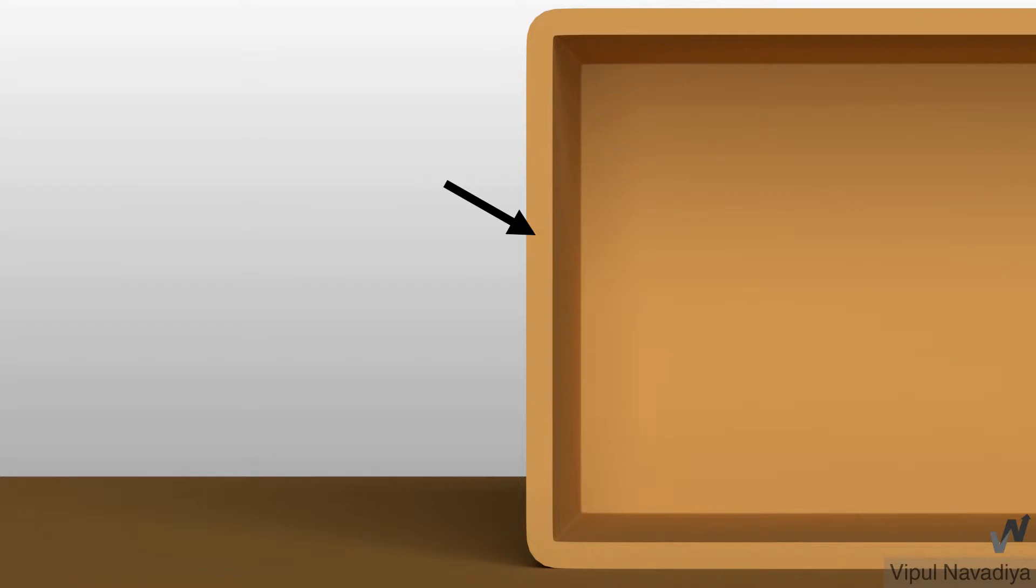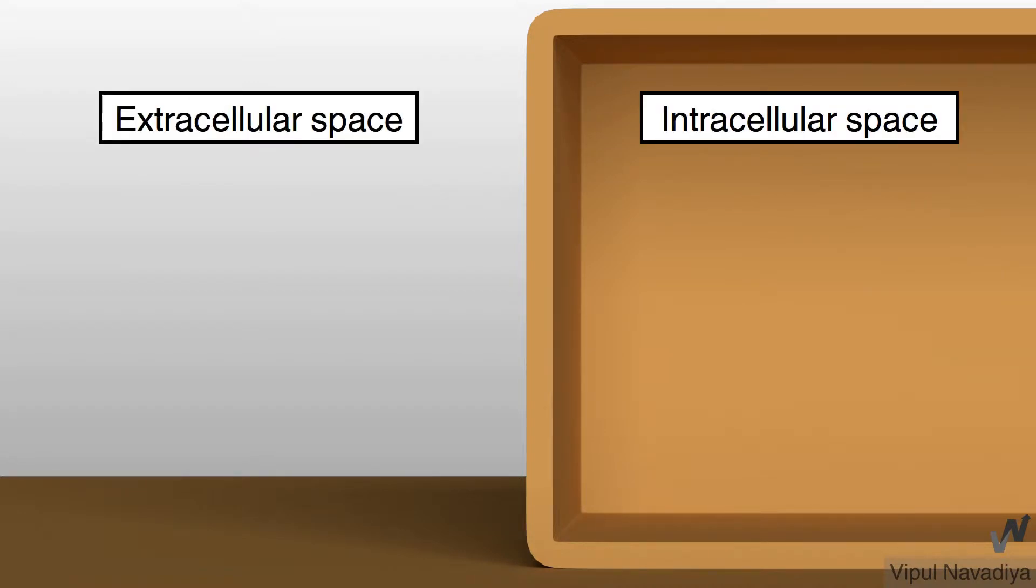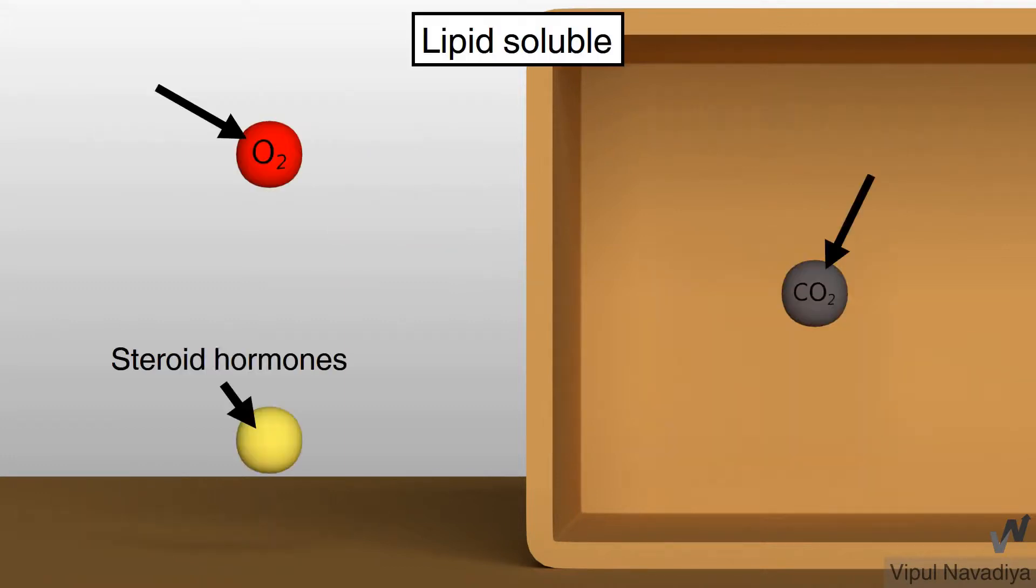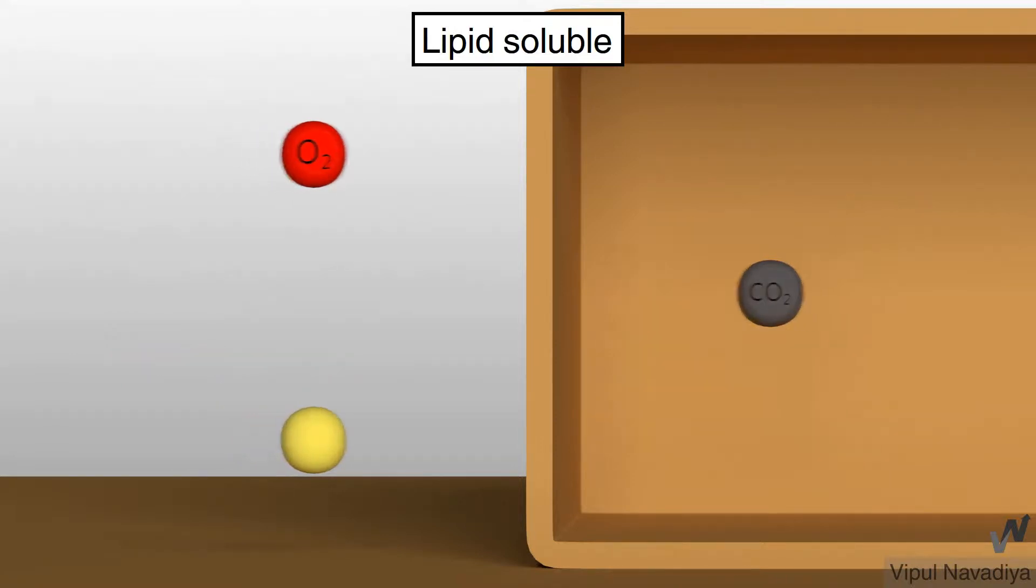This is cell. This is intracellular space. And this is extracellular space. Between two is cell membrane. Obviously entry or exit of any substance can occur through this membrane only. Now this membrane is made up of lipids. So, it allows passage of lipid soluble substances only.